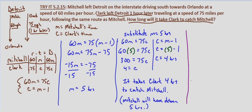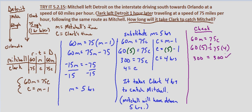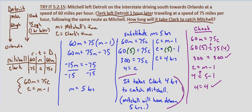Let's check our solutions. For 60M equals 75C: 60 times 5 equals 300, and 75 times 4 equals 300 — it checks out. For C equals M minus 1: does 4 equal 5 minus 1? Yes, 4 equals 4. This verifies that it takes Clark four hours to catch Mitchell, who was going 60 miles per hour, while Clark traveled at 75 miles per hour in the same direction.